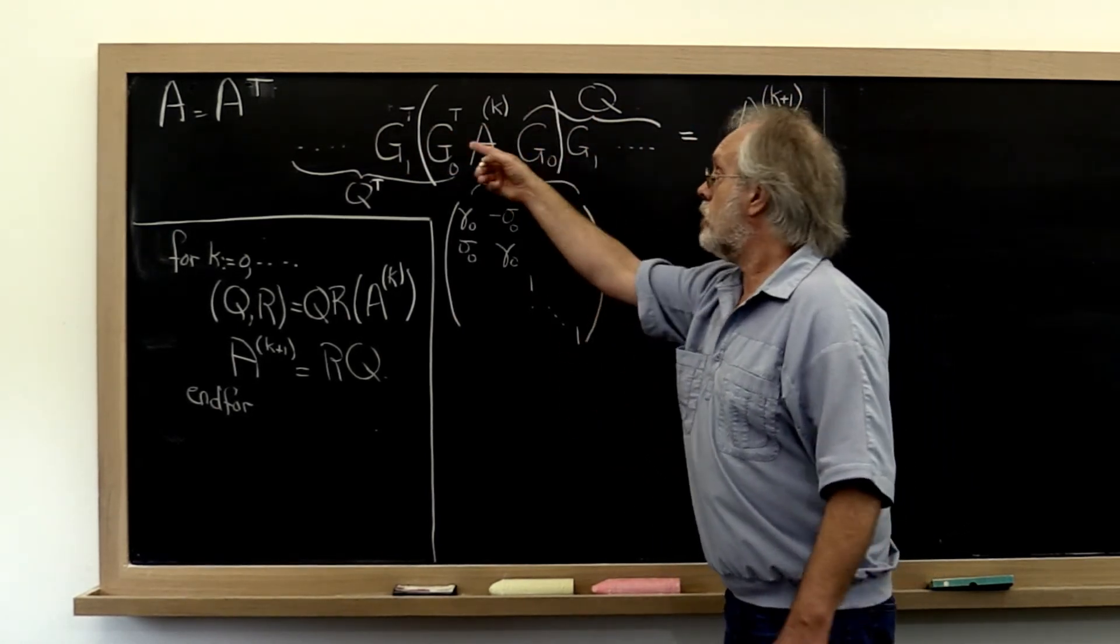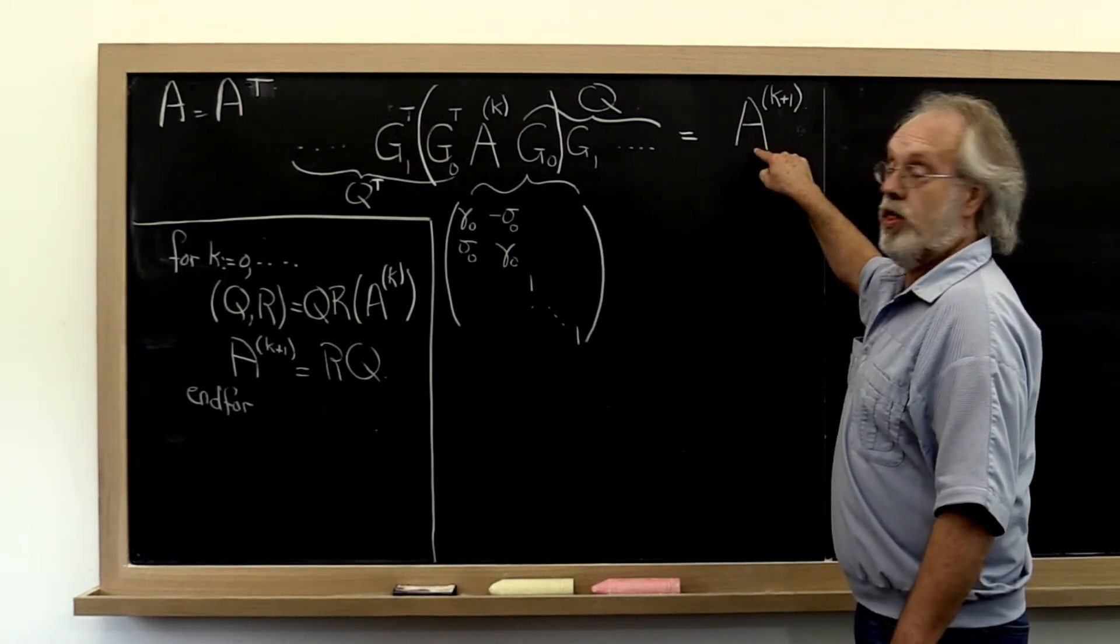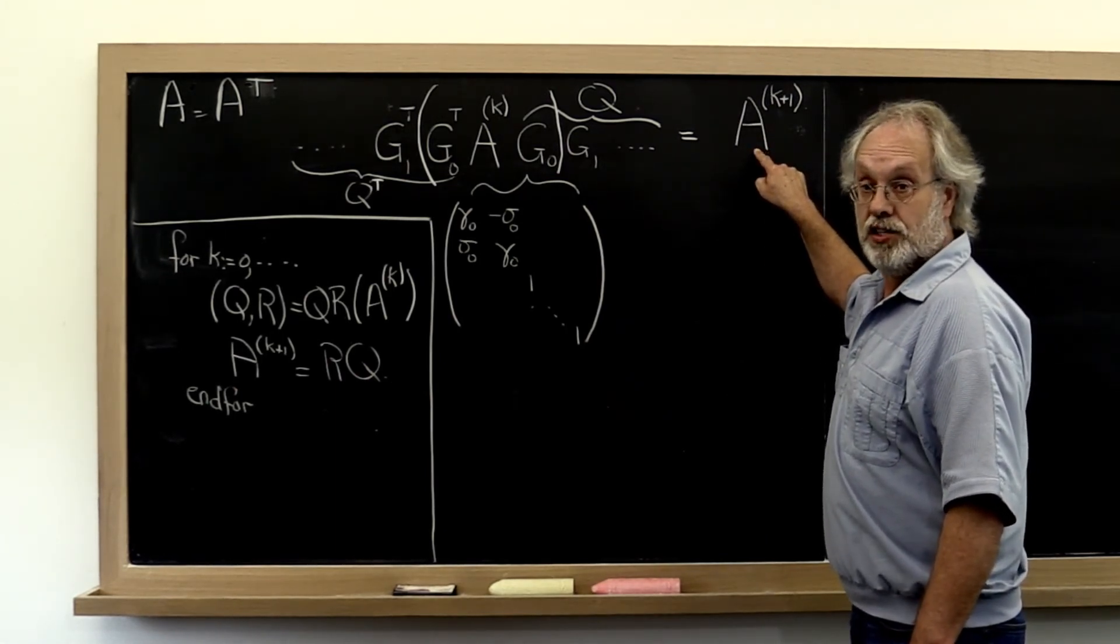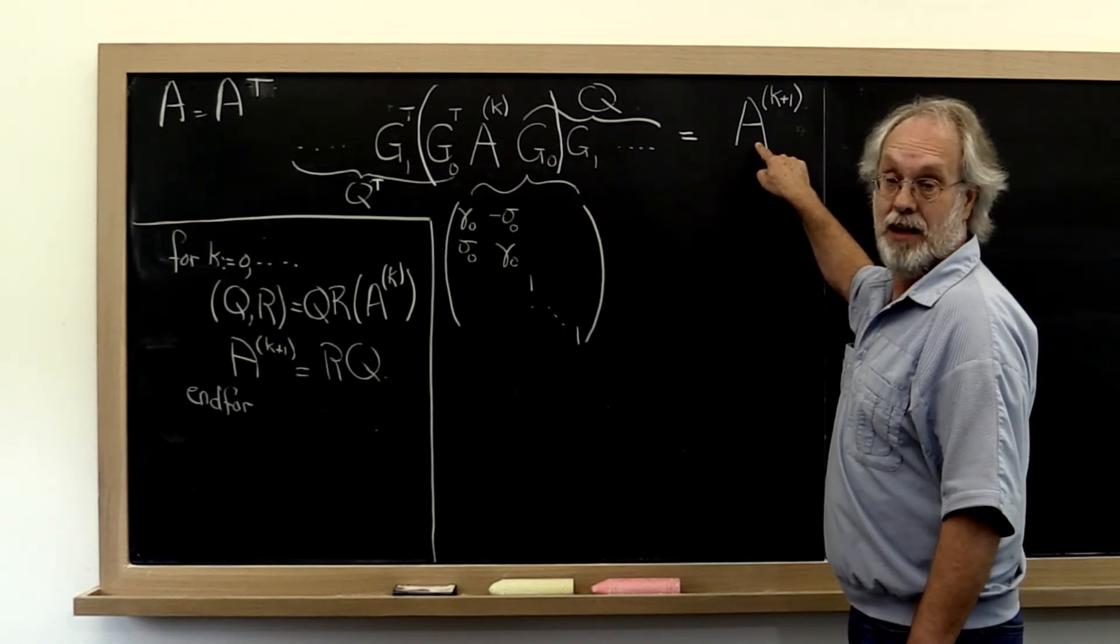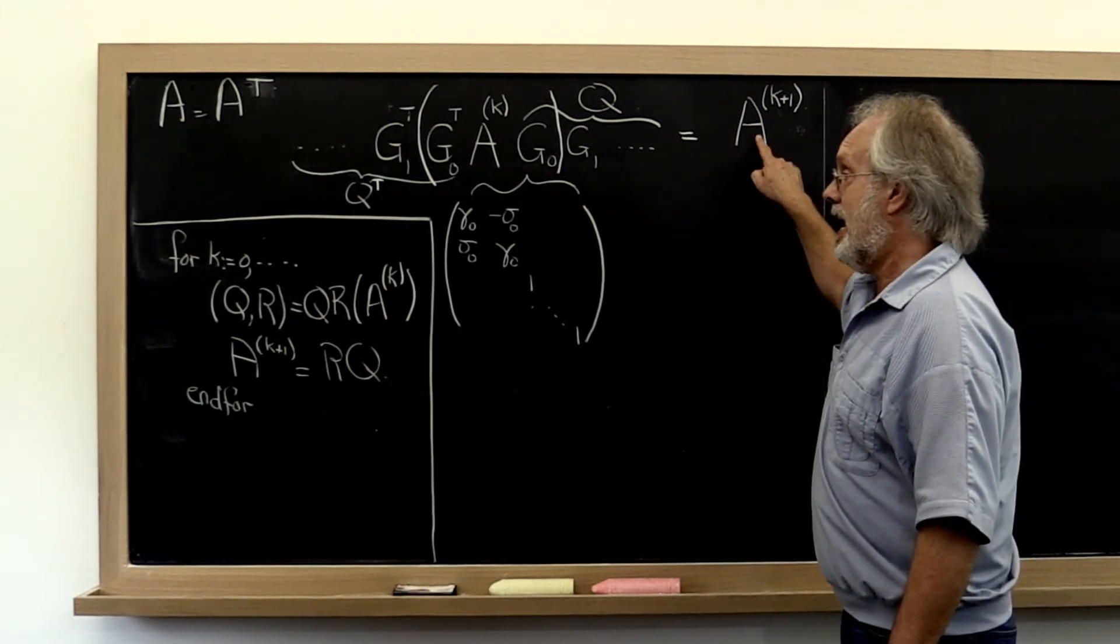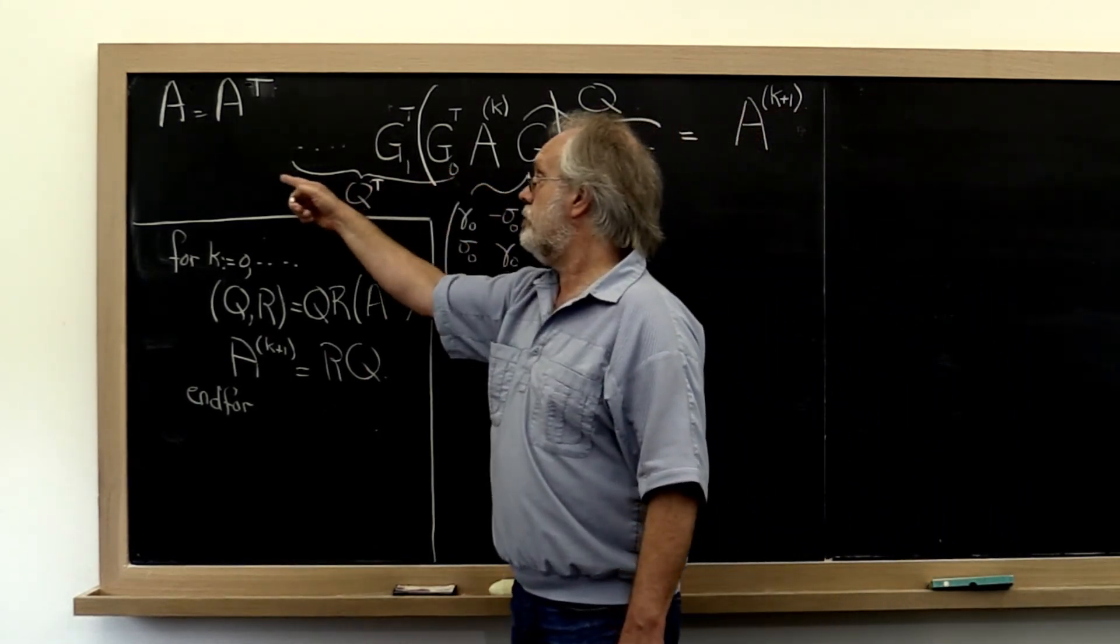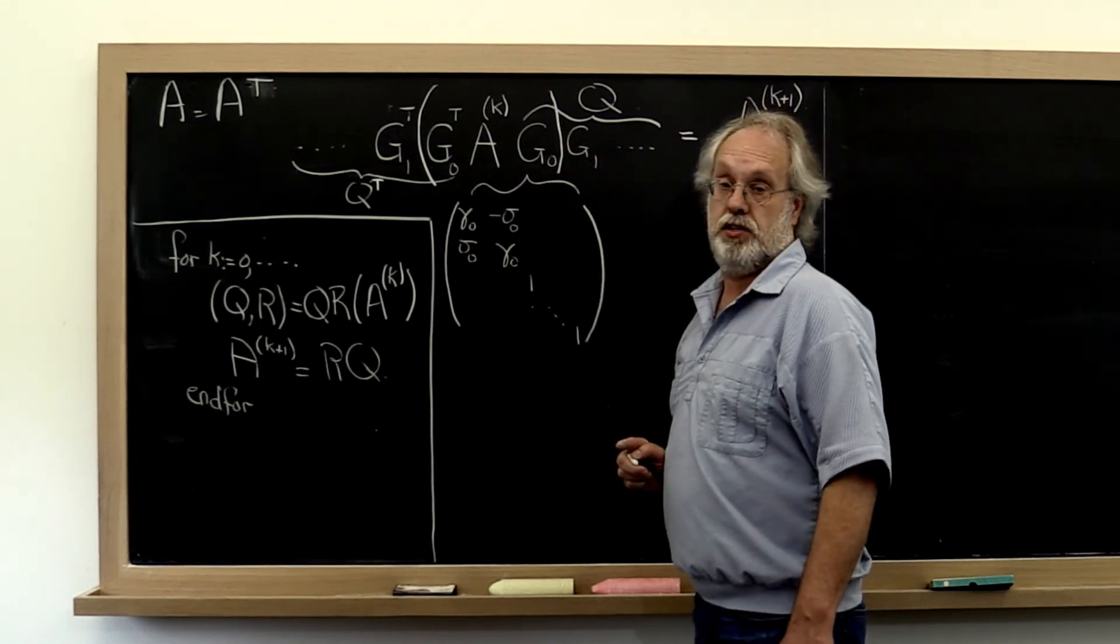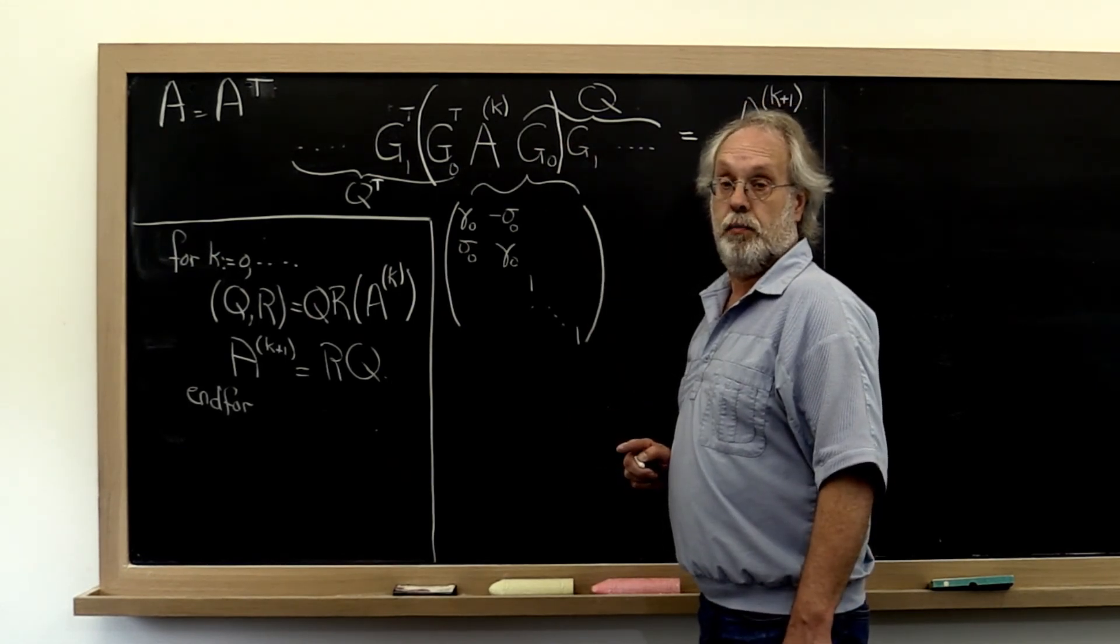in order to end up with a tridiagonal matrix, then the implicit Q theorem tells us that that's exactly the same tridiagonal matrix that we would have gotten had we actually computed all of the Givens rotations and then one by one applied those Givens rotations to the resulting matrix R.